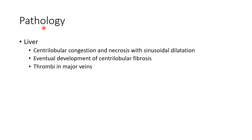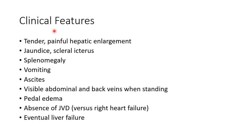Now let us see about the pathology in Budd-Chiari syndrome. The liver shows centrilobular congestion and necrosis with sinusoidal dilatation. There will be eventual development of centrilobular fibrosis. Remember: initially there will be centrilobular congestion followed by centrilobular fibrosis. We can also find thrombi in major veins of the liver.